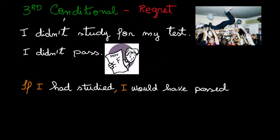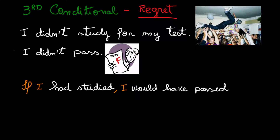The third conditional is basically used for regret. In this situation, I didn't study for my test because I was at a party. As a consequence, I didn't pass — I got an F for my test. Now we're going to make a sentence using this.